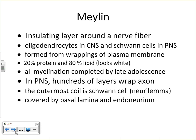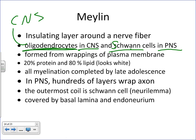Now let's talk about myelin. Myelin is an insulator around the axon, and there are two types of cells used to form myelin: oligodendrocytes, found within the central nervous system, and Schwann cells, found in the peripheral nervous system. Both do the same thing — they form the myelin sheath. Myelin is a lipoprotein: about 20% protein and 80% fat. With the naked eye it looks very white; when stained it appears more blackish.